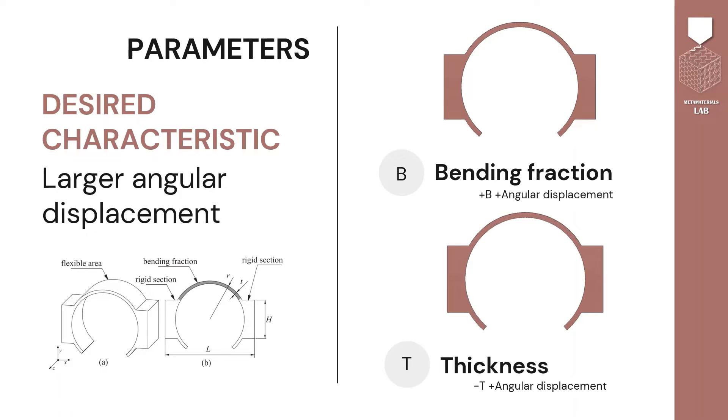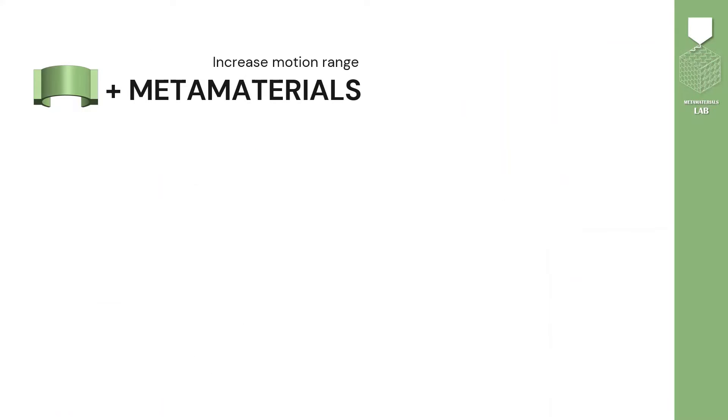The second parameter I chose defines how thick is the ring. The proposal to increase the motion range of the split tube is to transform its bending fraction into a metamaterial, which is done by removing material following a specific pattern. I decided to include biomimetics in the project.